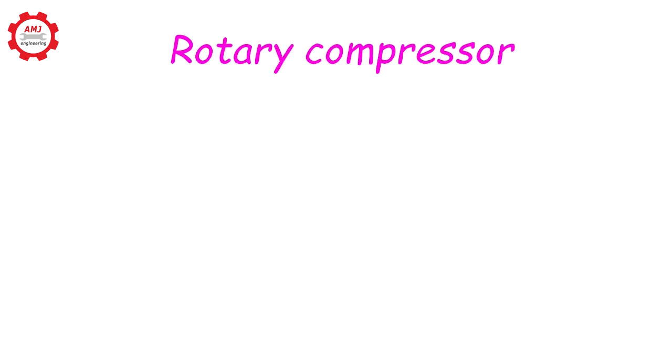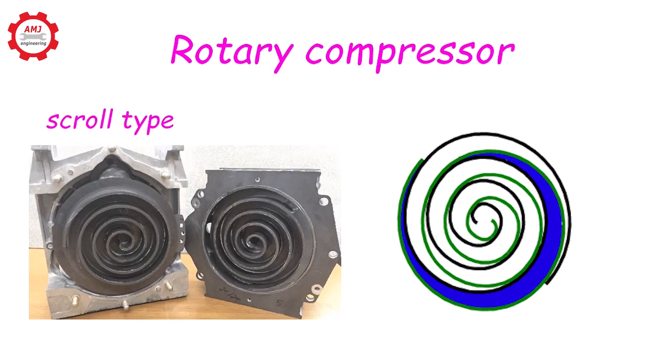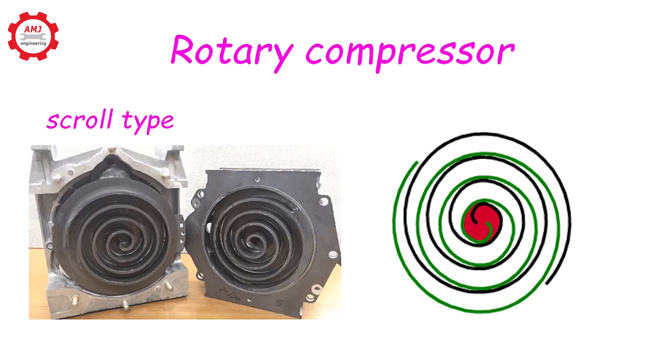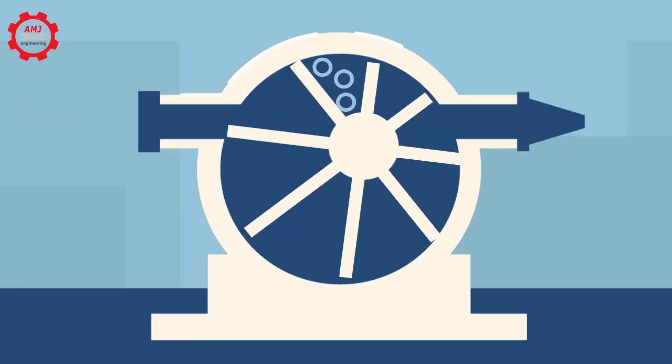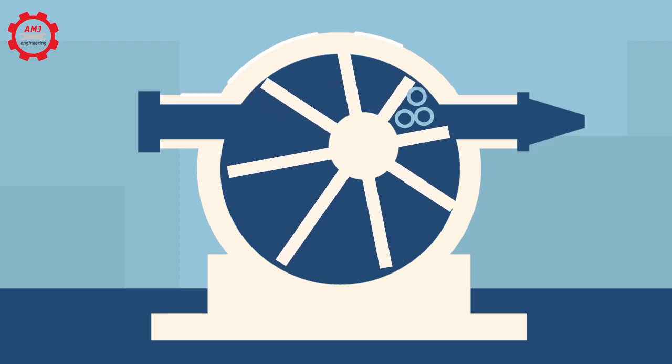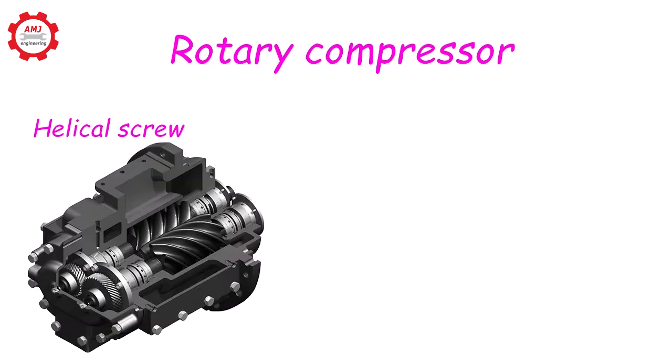The third type is the rotary compressors which could use one of the following: scrolls, rotating vanes, or helical screw.